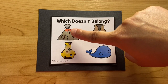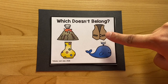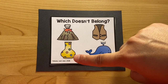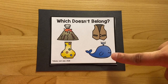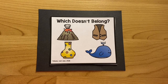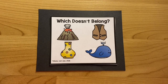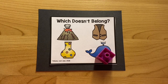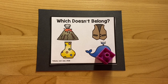Volcano. Vest. Vase. Whale. Which word doesn't belong? Whale. That's right. Whale doesn't belong because whale begins with the sound WH. And the rest of the words begin with the sound V. Good job.